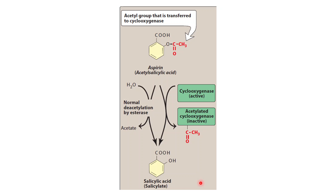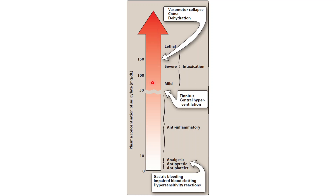Toxicity of aspirin is seen at plasma concentrations higher than 100, and 150 is actually common. Adverse effects like gastric bleeding are seen at low doses — already at 10 milligrams — so these adverse reactions cannot be avoided. In children, aspirin is more toxic; even 10 grams of aspirin can be fatal. That is why it should be kept away from children.